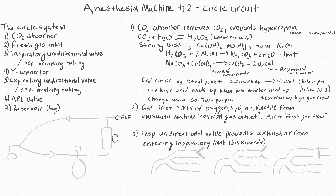Number two is the fresh gas inlet. This is the gas coming from the common gas outlet on the anesthetic machine — a mix of oxygen, nitrous, air, or volatile from the anesthetic machine. In the circle circuit, the best use of this fresh gas flow is really just to be high enough to replace the losses going through the circuit: replacing volatile anesthetic absorbed by the patient, oxygen used by the patient, or gas lost through the adjustable pressure limiting valve or any other circuit leaks.